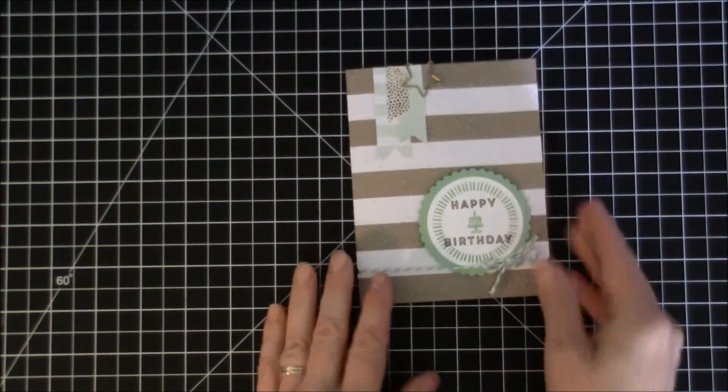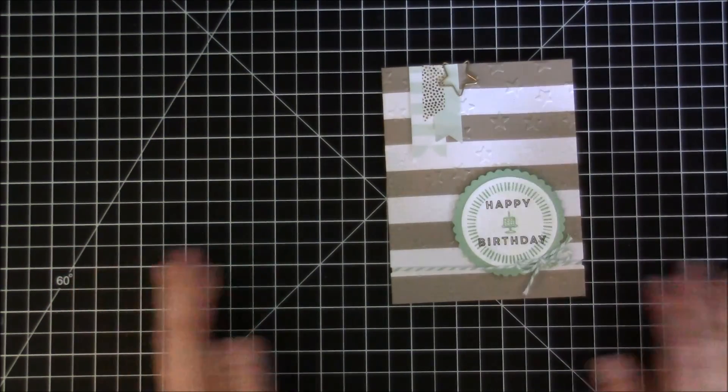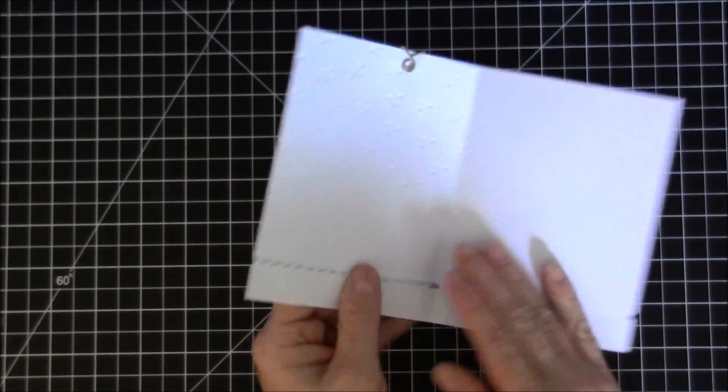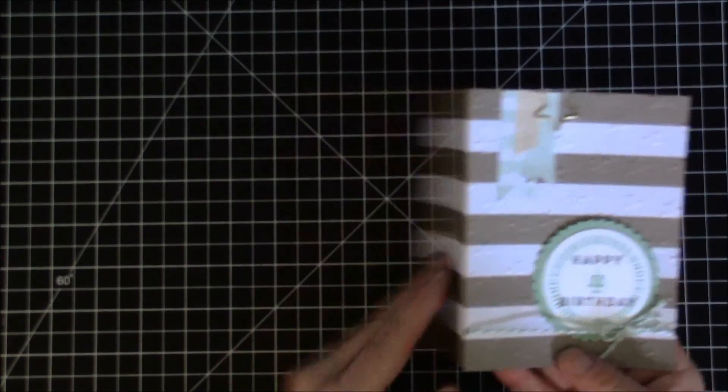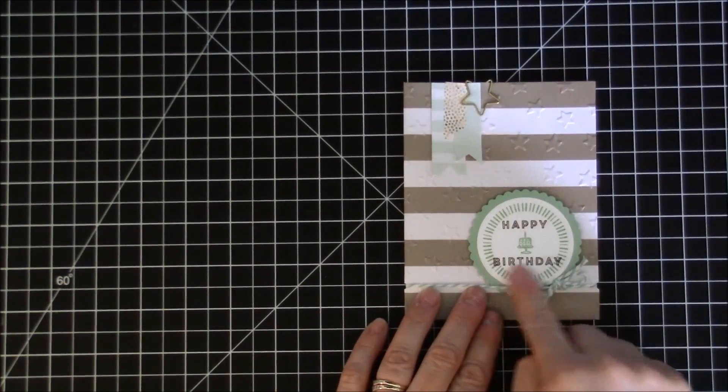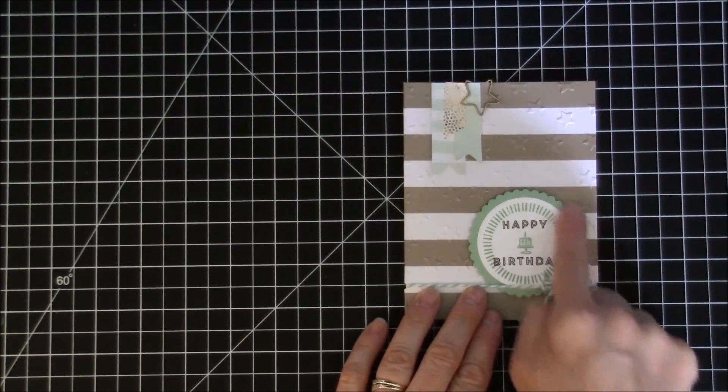The next card is just a simple birthday card that I thought would be fun for summer. There's so much nautical themes and stuff out there right now, so I used our star embossing folder to emboss the front panel of the card and then again I used the stamp set here with the early espresso mint macaron to do this little sentiment.